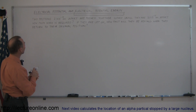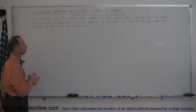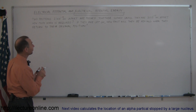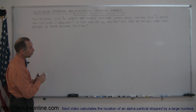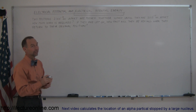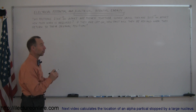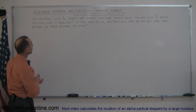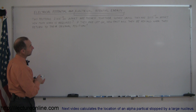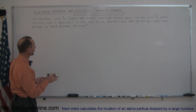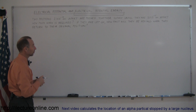We have two protons that are 2 times 10 to the minus 10 meters apart. That doesn't seem like a lot, but for protons that's quite a distance. They're pushed together slowly until they're 3 times 10 to the minus 15 meters apart — pretty close, about the size of an atomic nucleus. How much work is required? And if they're let go, how fast will they be moving when they return to their original position?